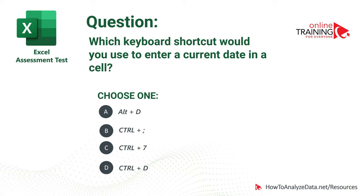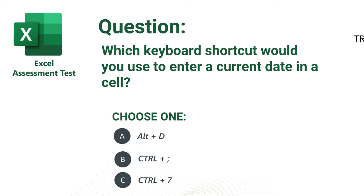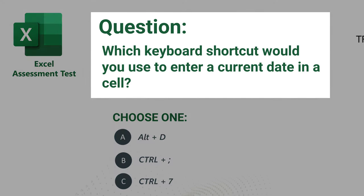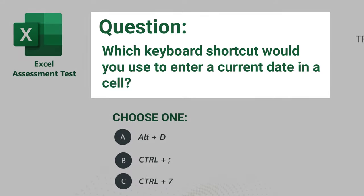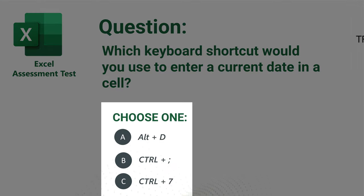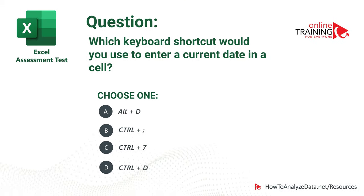Here is a tricky question to test your knowledge of Excel keyboard shortcuts, which is very frequently used as part of an Excel assessment test. Which keyboard shortcut would you use to enter a current date in a cell? You have four choices: Alt plus D, Ctrl plus semicolon, Ctrl plus 7, and Ctrl plus D. Which one do you think is the right answer?